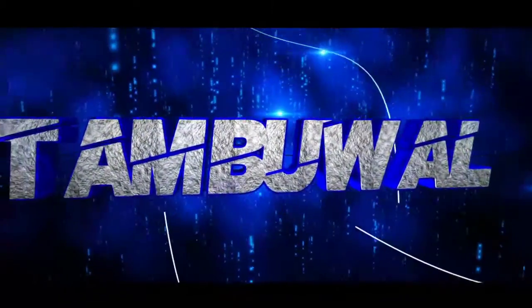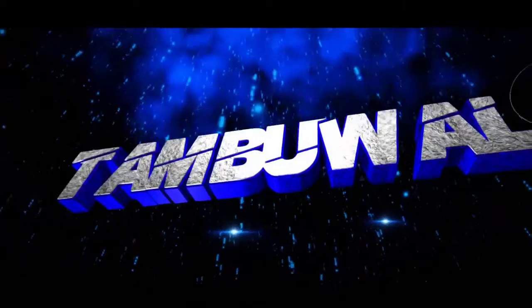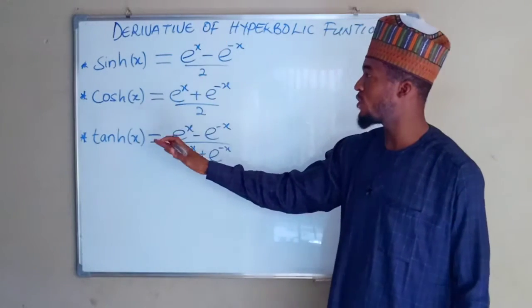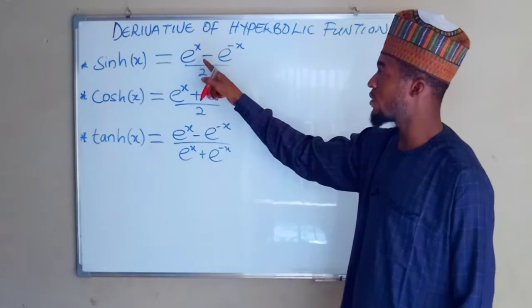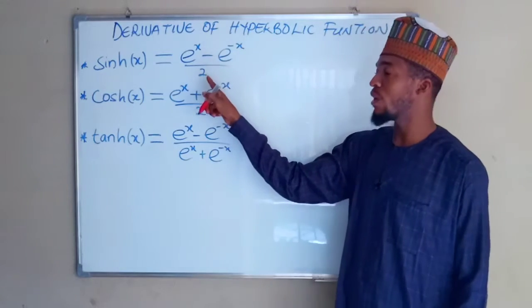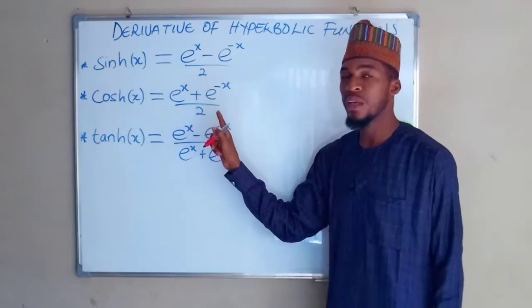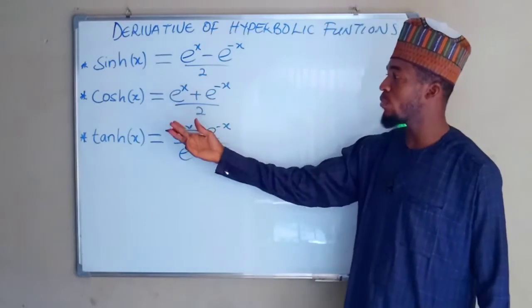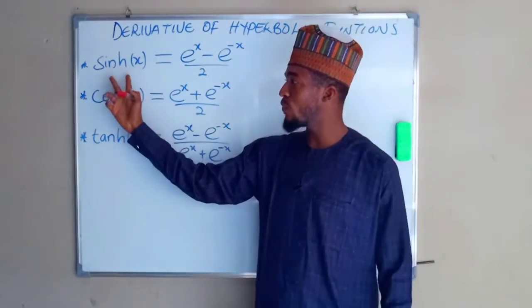The three main hyperbolic functions are defined as follows. The first one, sinh(x), is defined as e^x minus e^(-x) divided by 2. The hyperbolic cosine of x is defined as e^x plus e^(-x) divided by 2. And tanh, as you know, is sine divided by cosine.